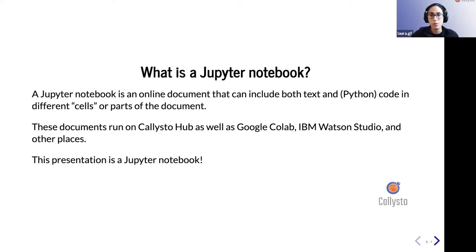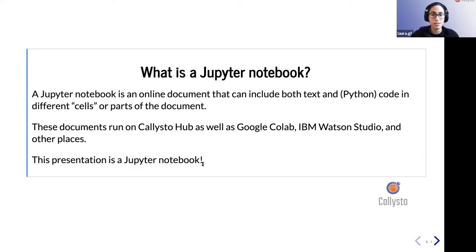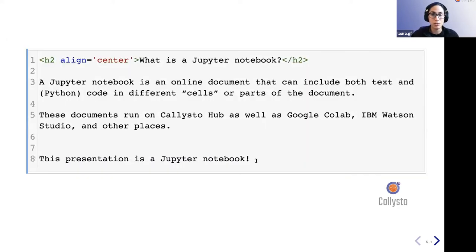If you haven't had a chance to work with Jupyter Notebooks before, you can think of this as an online document that includes both text and Python code in different cells or parts of the document. These documents run on a Callisto hub, as well as Google Colab, IBM Watson Studio, and other places. And as a fun fact, this presentation is a Jupyter Notebook.